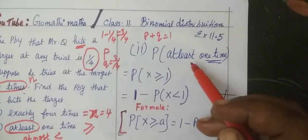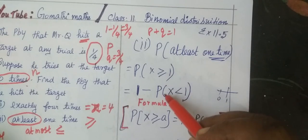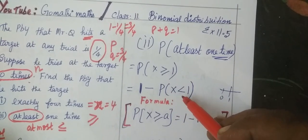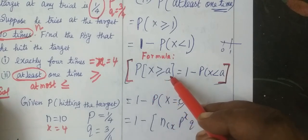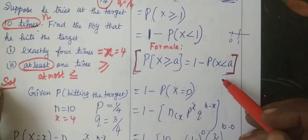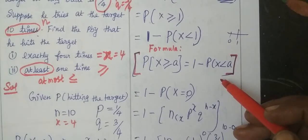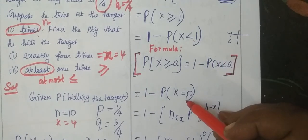Next, at least. At least now, the formula is greater than or equal to. The formula is P of X greater than or equal to a equals 1 minus P of X less than a. So we consider X equal to 0. Why consider 0?